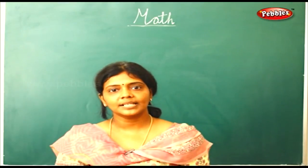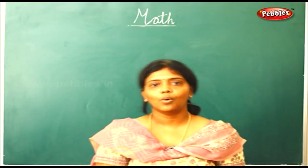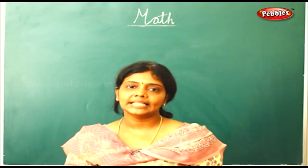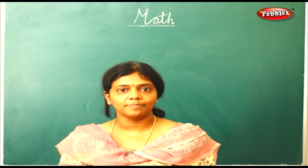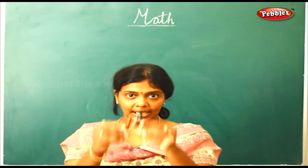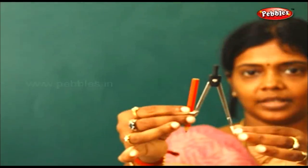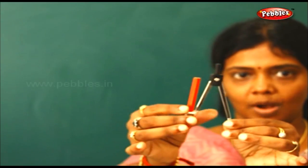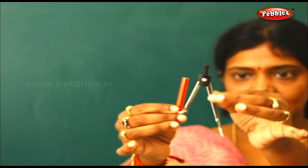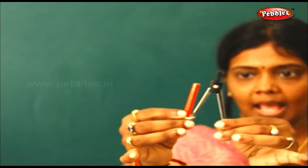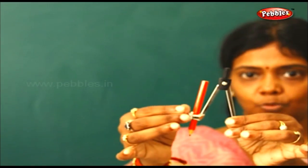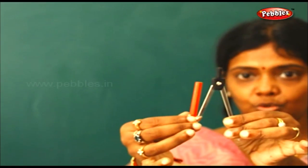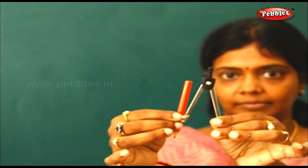Now we are going to see something called a compass. You all know what a compass is — you find it inside your geometry box. Here I have a compass with me. There are two arms: this end is called the pivot arm, and this one is the movable arm. The movable arm has got a screw to fix a pencil.